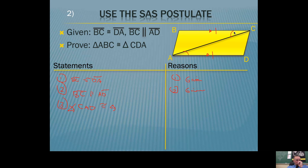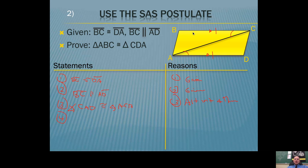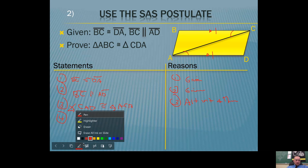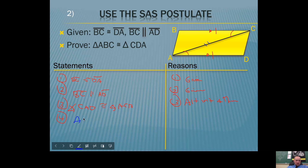Then name the second angle, making sure you line up the corresponding parts. C goes with A, so when naming this angle, make sure you name it angle ACB. That's the Alternate Interior Angle Theorem. At this point we have two pairs of congruent parts. Notice that segment AC is on both triangles, so segment AC is congruent to itself — just make sure you write the order correctly. Does A go with A, or does A go with C? A goes with C, so segment AC is congruent to segment CA by the Reflexive Property.